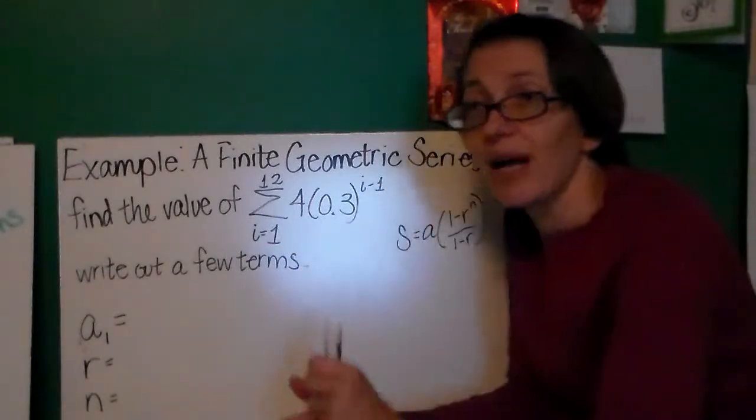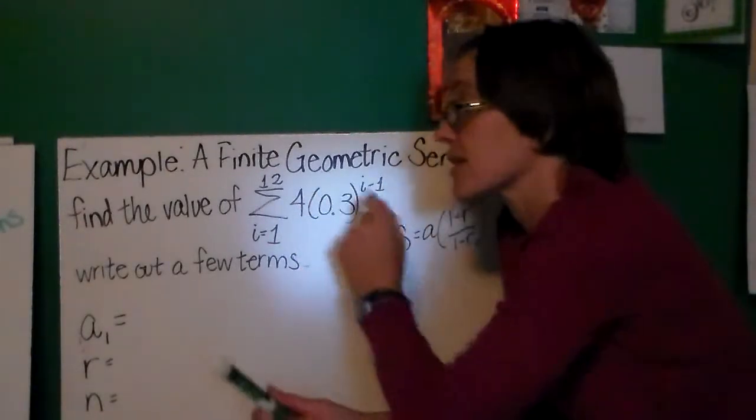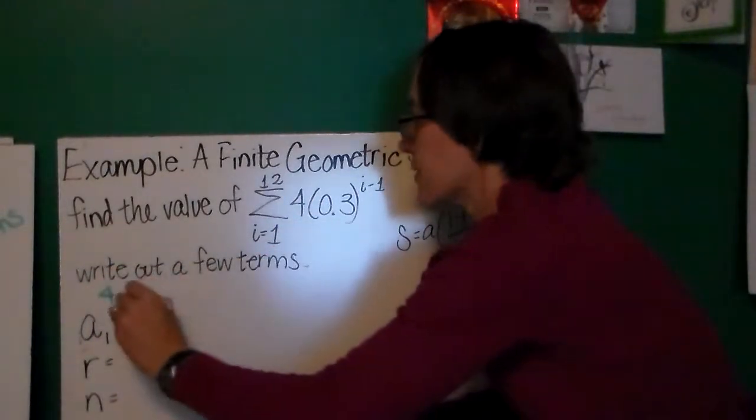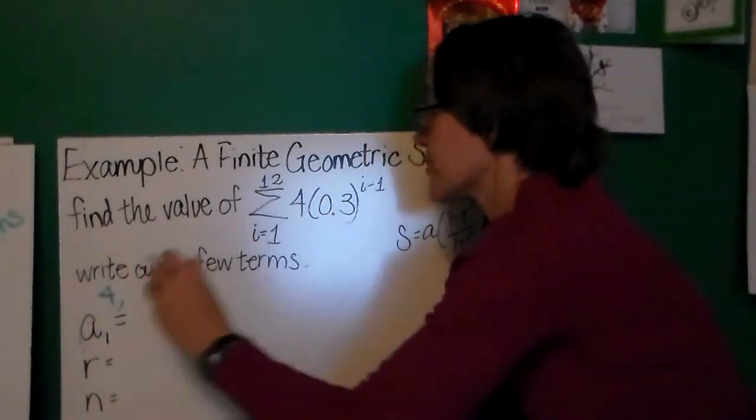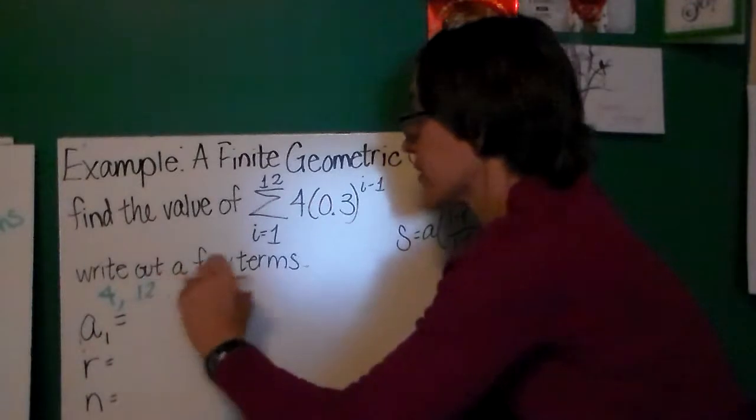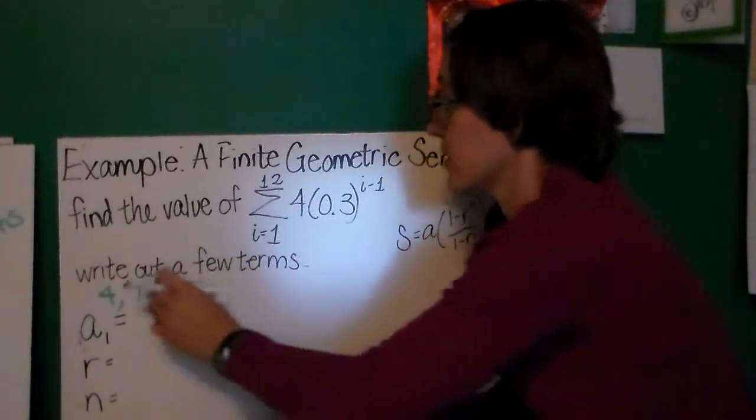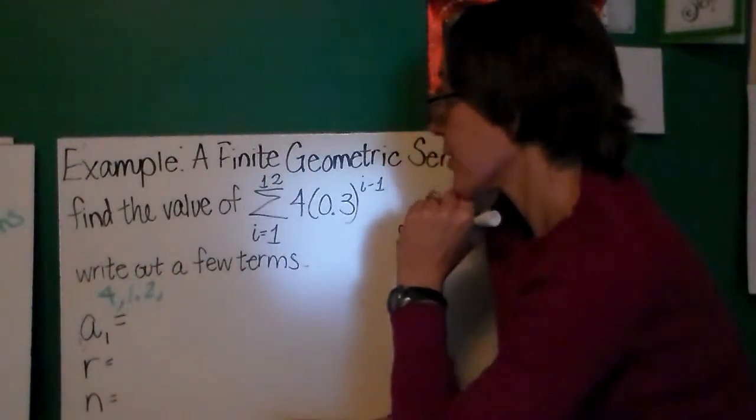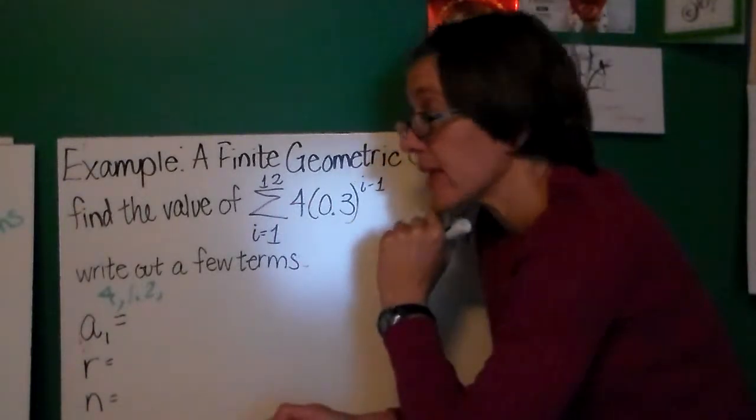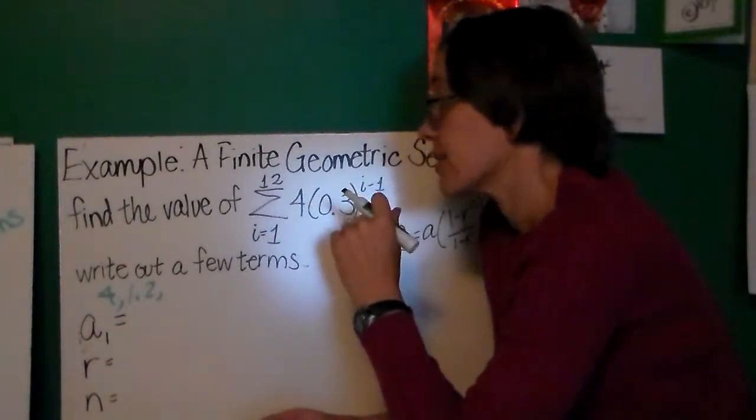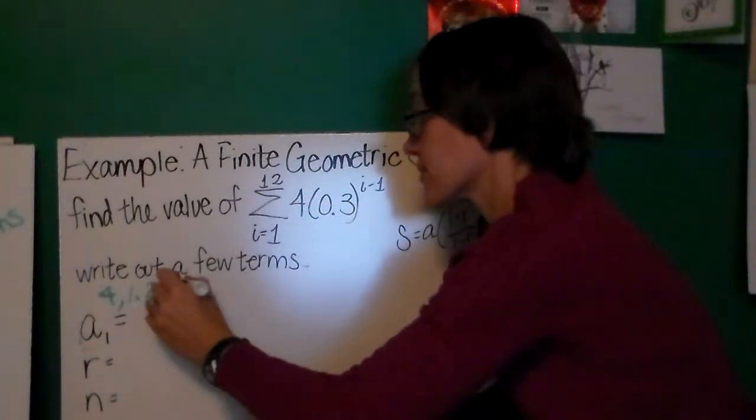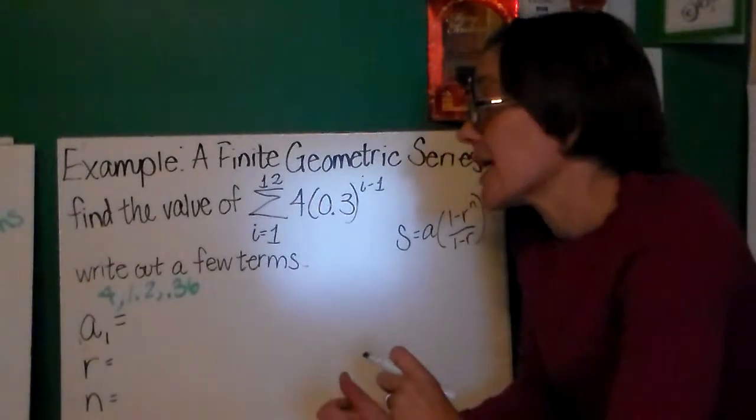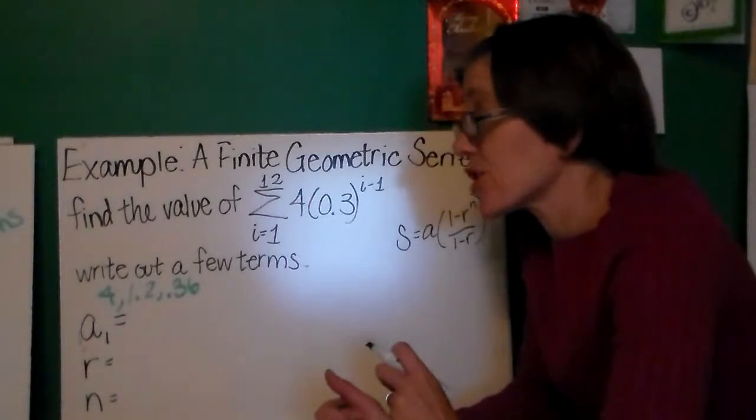It is. i is 1. This says i minus 1. If I write out a few terms of this expression, well, I'd have 4 times 0.3 to the 0. That's just 4. 4 times 0.3 to the first is 1.2. 4 times 0.3 to the second power is going to be 4 times 0.09. So it's going to be 0.36. So I notice that this is trending down.